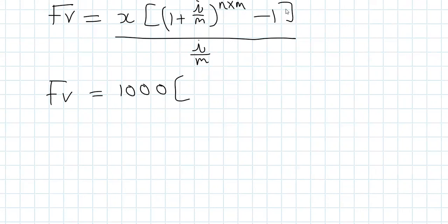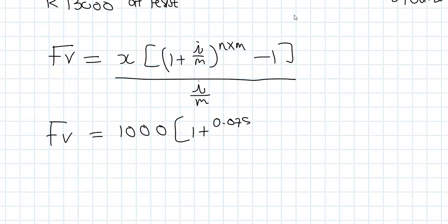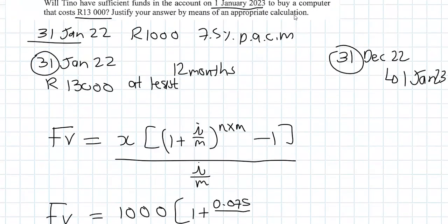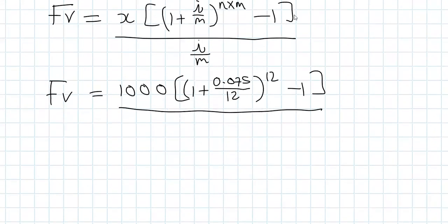We substitute in our known values. x is 1,000 rand. Our interest as a decimal is 0.075. The compounding period is monthly, so 12. It's one year times 12 months, giving 12 in the exponent. We subtract one and divide by the interest over the compounding periods — 0.075 over 12.